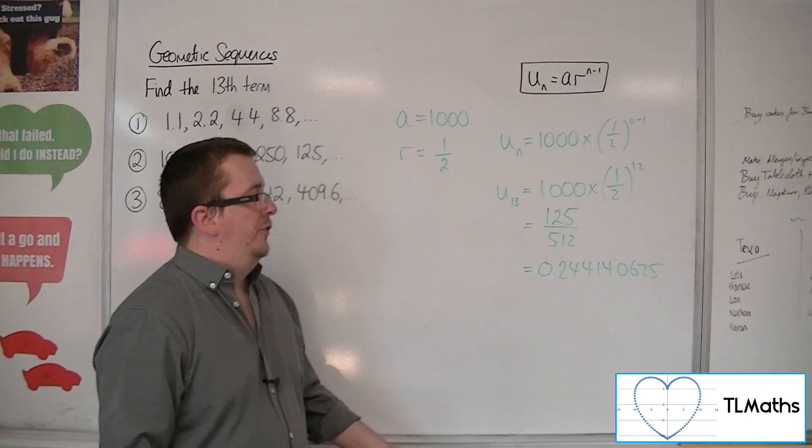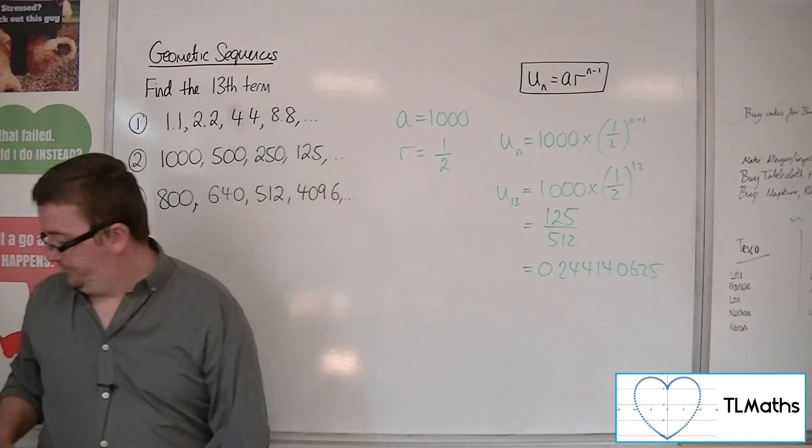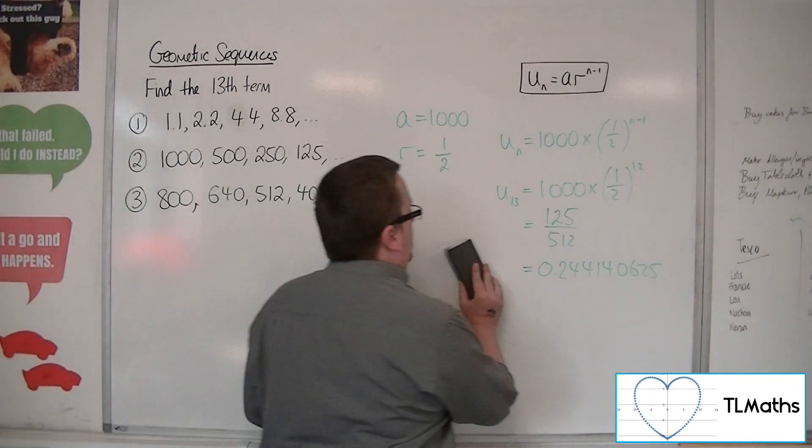Which is equal to 0.244140625. Full calculator display. But 125 over 512 is the exact value. So that's number 2.